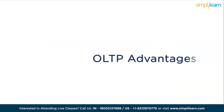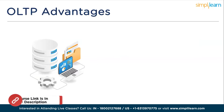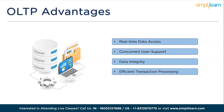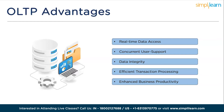Let's proceed to the OLTP advantages. There are many advantages of using an OLTP platform; we will discuss the top five. First is real-time data access: OLTP systems provide immediate access to up-to-date data, enabling users to make timely and informed decisions. Second is concurrent user support: OLTP systems can handle multiple users simultaneously, ensuring smooth operation during peak times. Third is data integrity: OLTP systems maintain data integrity by enforcing ACID properties, ensuring transactions are processed reliably and accurately. Fourth is efficient transaction processing: OLTP systems efficiently process small, frequent transactions, making them ideal for day-to-day business operations. And lastly, enhanced business productivity: OLTP systems boost overall business productivity and responsiveness by streamlining transactional processes and providing quick access to critical data.